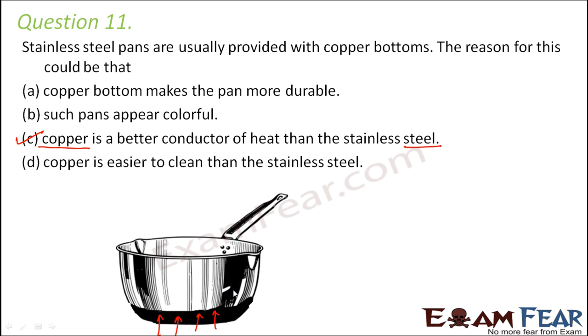It will allow more heat to pass through it. It will get heated up quickly and also heat the vegetables and content inside more quickly. Quick cooking will become quicker, and that is why copper bottoms are preferred over normal ones.